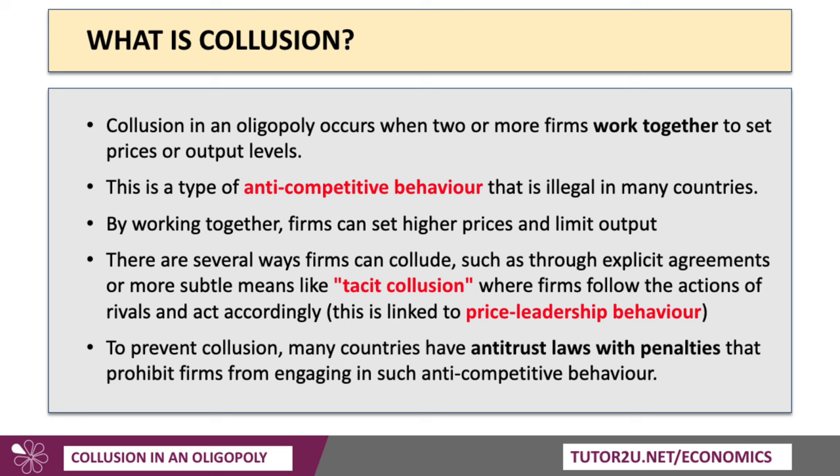By working together, by colluding, firms can set higher prices and limit output. They might do it through an explicit price-fixing agreement, or more subtle means such as tacit collusion, where basically firms follow the actions of a rival and act accordingly.